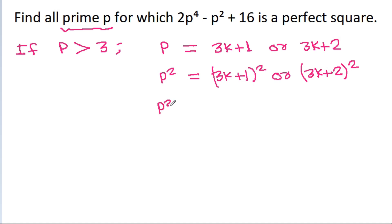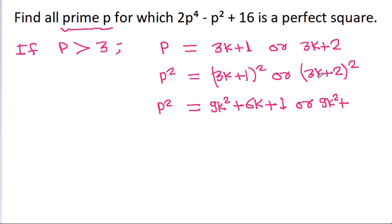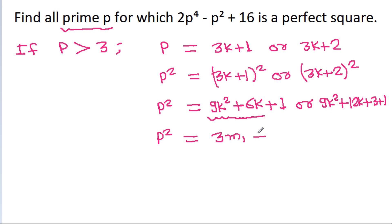p² = (3k+1)² = 9k² + 6k + 1, or p² = (3k+2)² = 9k² + 12k + 4, and 4 = 3 + 1. So in both cases, p² is of the form 3m + 1. We can write this as 3m₁ + 1 or 3m₂ + 1.